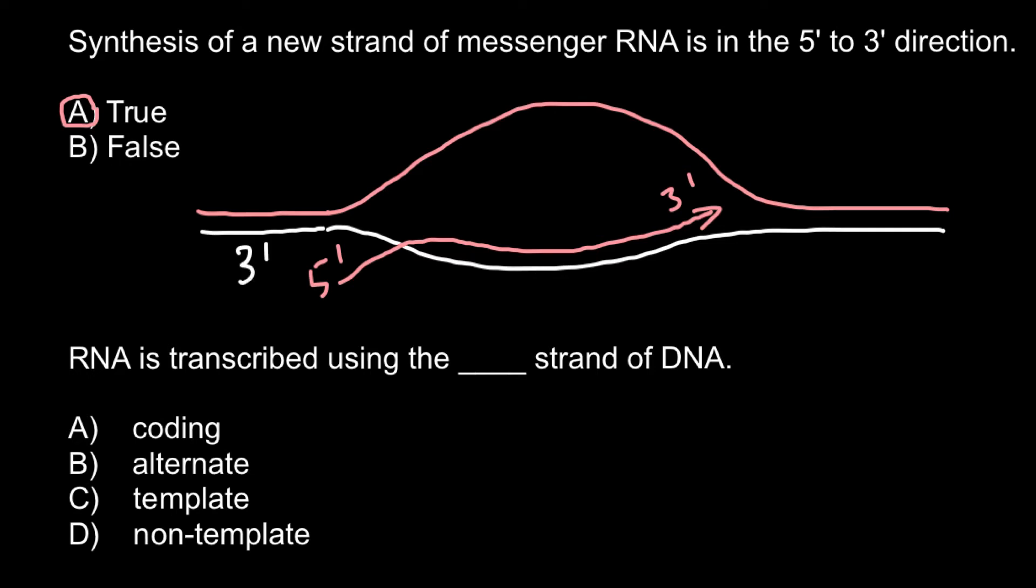And because we have 3 prime end here on this strand of the DNA, we would have 5 prime end. And that also gives us information that here we would have on this strand of the DNA 3 prime end and 5 prime end here.